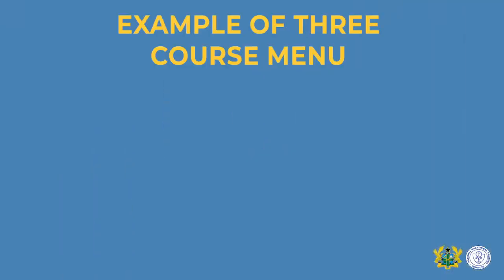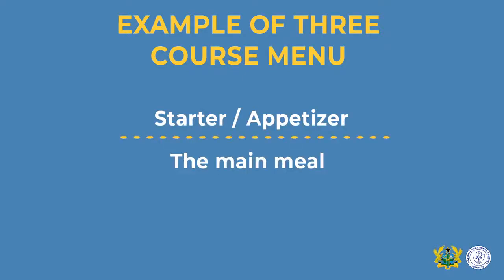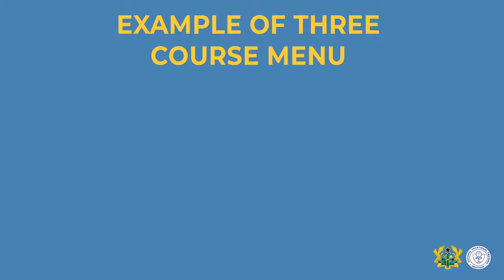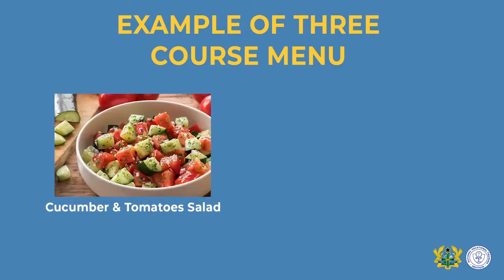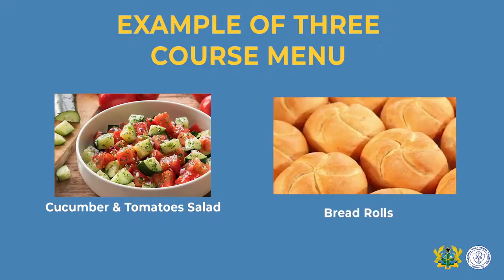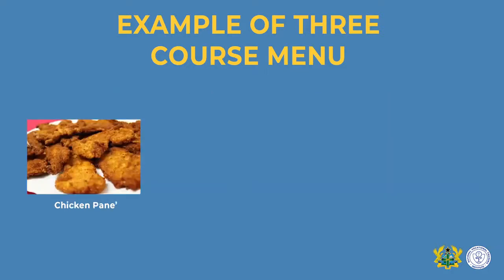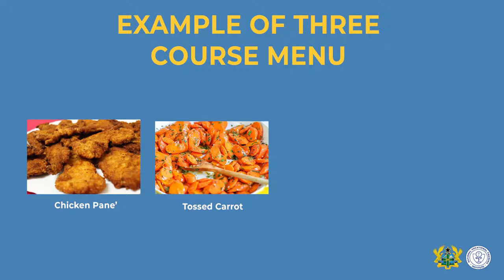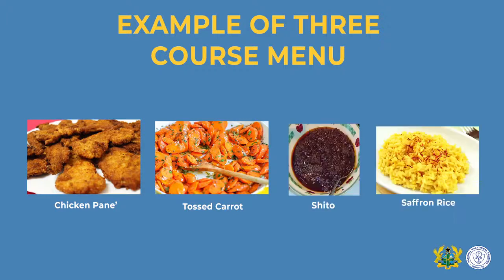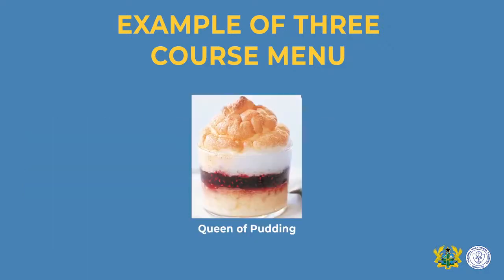A three-course menu comprises of three courses: a starter or appetizer, the main meal, and a dessert. An example of a three-course meal: the starter can be tomato and cucumber salad with bread toast; the main meal is chicken pané, tossed carrots, cheddar and saffron rice; and the dessert being queen of pudding.